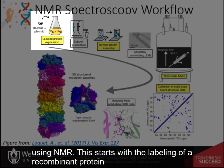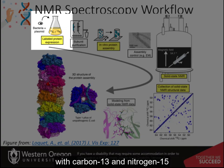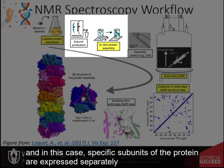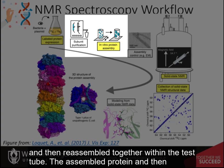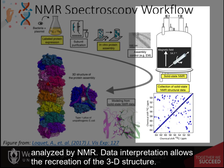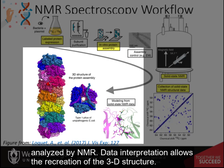This starts with the labeling of a recombinant protein with carbon-13 and nitrogen-15 during the growth of the bacteria. The protein is then purified, and in this case, specific subunits of the protein are expressed separately and then reassembled together within a test tube. The assembled protein is then analyzed by NMR. Data interpretation allows the recreation of the 3D structure.